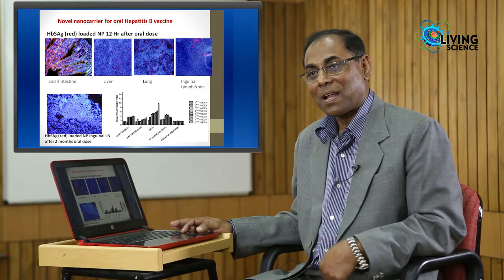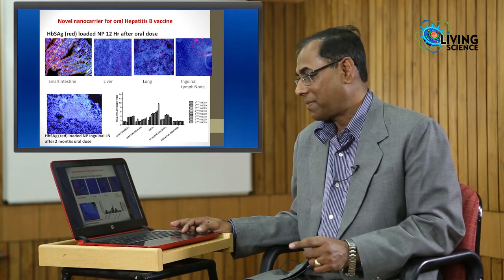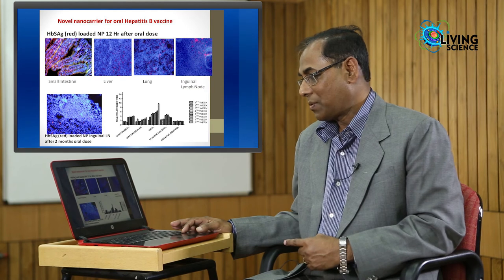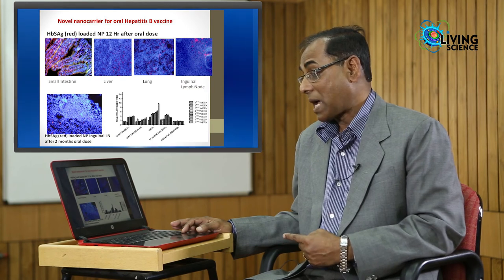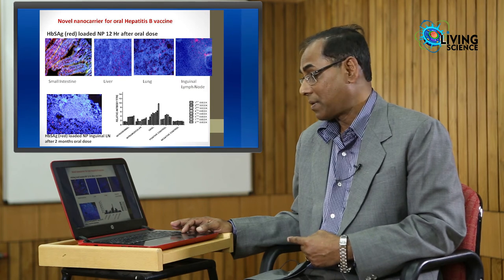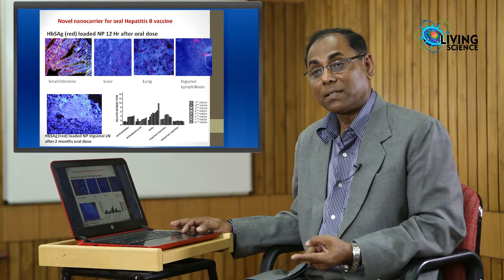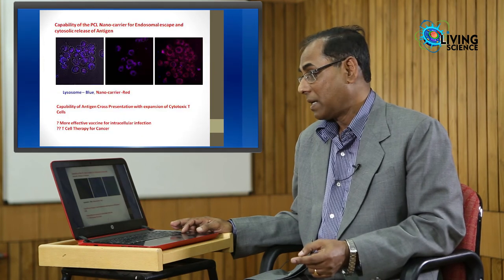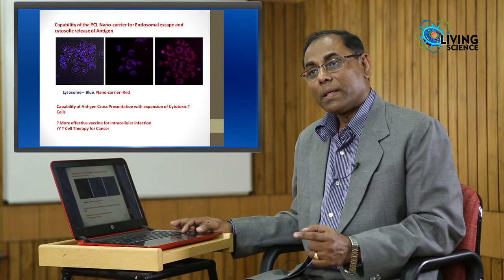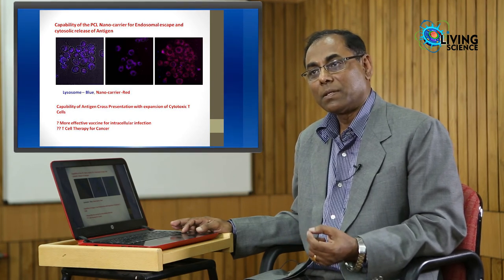They have reached all these lymphoid sites after oral delivery. This is only possible because we have loaded them in a particle which can pass through and absorb through the GI tract and enter into your lymphatic circulation. If you see, these oral antibody titers are almost highest in comparison to intradermal and intramuscular, as well as Shanchol, the vaccine we are currently using for humans.